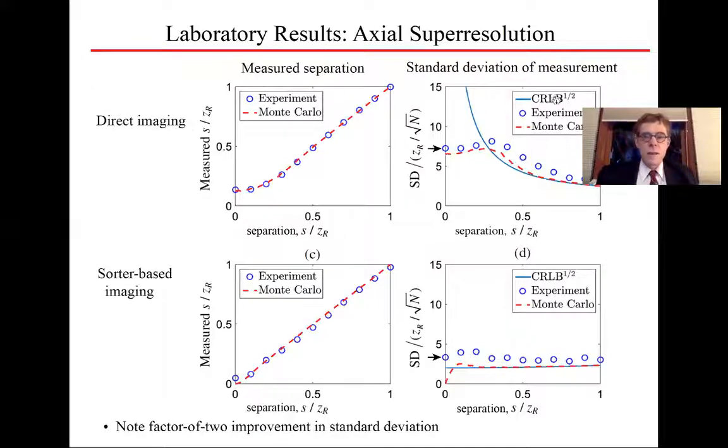Here are the results. In this column here, we have the measured separation. In this column here, we have the standard deviation of the measurement. We do it both for direct imaging and for sorter based imaging. And you see that with the exception of a little region here, both of these methods are reliable. They plot the measured separation as a function of the actual separation along a straight line that goes to the origin. What's of interest to us right now is the standard deviation of the measurement. Here is the sorter based imaging. And you see that at a very small separation, the standard deviation is about three in these normalized units.